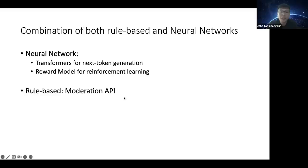There's one part of ChatGPT that is not really a neural network — it's more like using some form of API where they moderate the content. They probably search for offensive or discriminatory words and do a blanket response like 'sorry, we are not able to generate this.' This is the rule-based part.